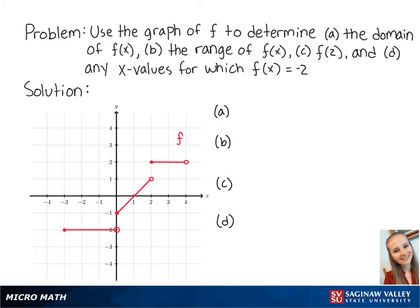For letter a, the domain of f of x is the set of all x values within the function. Looking at the graph, we can see that the smallest value of x is negative 3 and the highest value of x is 4. However, the point where x equals 4 does not exist, so we cannot include it. This means x is between negative 3 inclusive and 4 exclusive, so we write the domain as [-3, 4), with a bracket on the left because negative 3 is included and a parenthesis on the right because 4 is excluded.